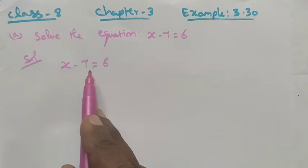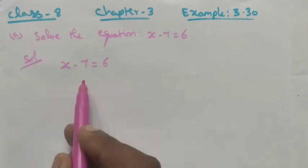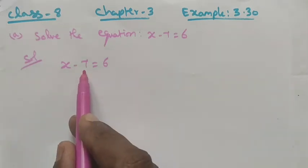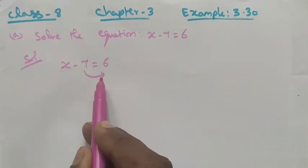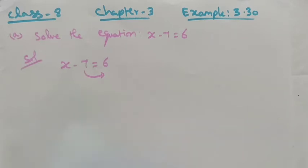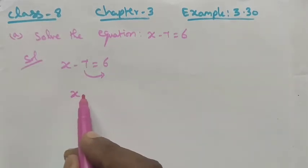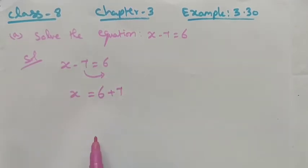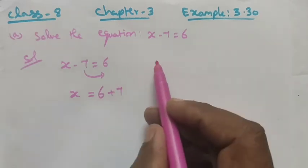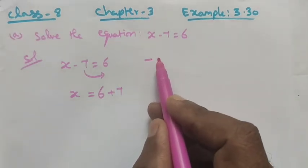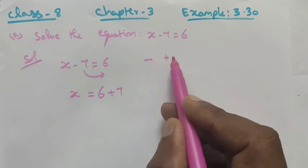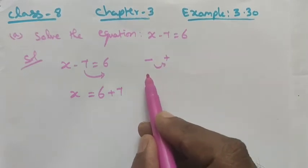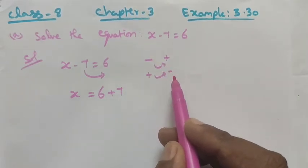In the equation x minus 7 equals 6, x equals... we already have 6 on the right, and minus 7 becomes plus 7 by transposition method. When transposing, minus becomes plus and plus becomes minus.